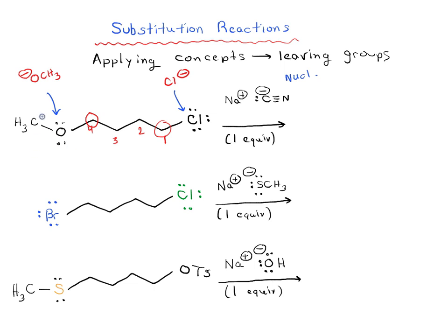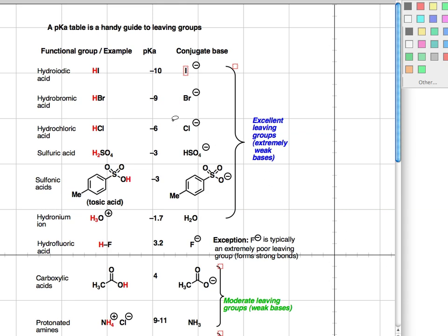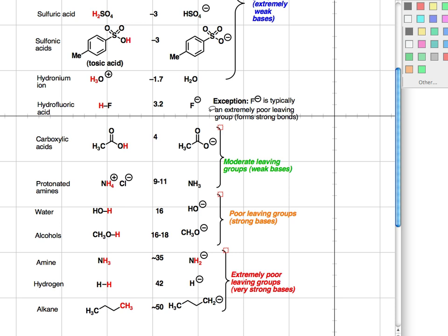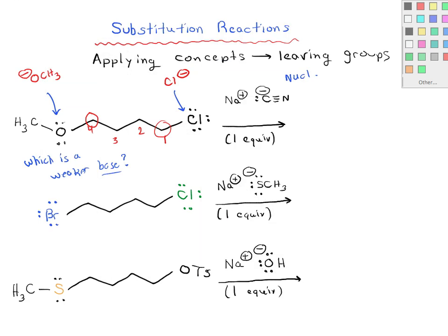So the question to ask is which is a better leaving group, which means which is a weaker base? How do we figure out which one of these two, OCH3 or Cl, is a weaker base? Well, there's one way to do that and that is just by looking at what we call a pKa table. We can look at a list of conjugate bases, and the strongest acids have the weakest conjugate bases. We can find Cl minus here, it's the conjugate base of hydrochloric acid, and we see that it's actually listed as an excellent leaving group. And down here we have alcohols, in example methanol, and the conjugate base of methanol is CH3O minus. So this is a much stronger base than Cl, which is going to tell us that Cl is actually our better leaving group here.